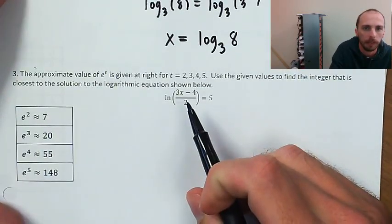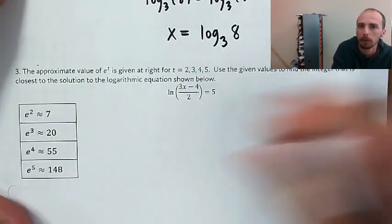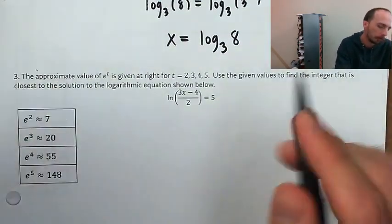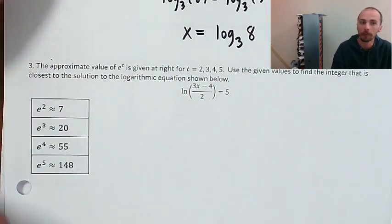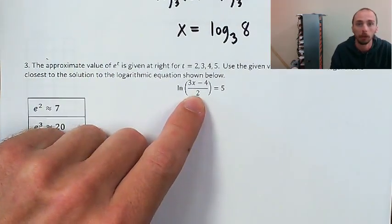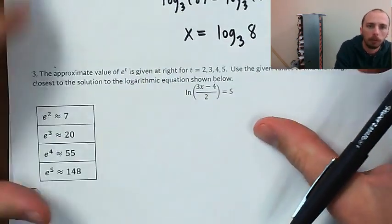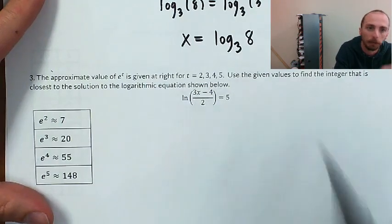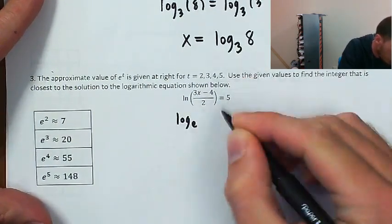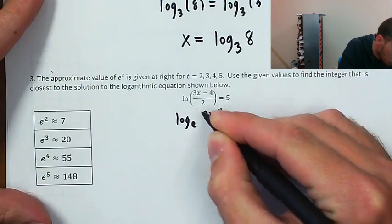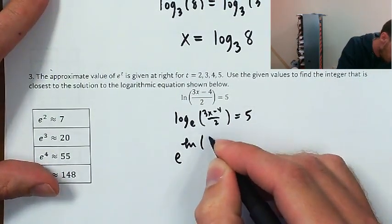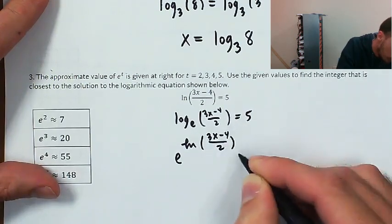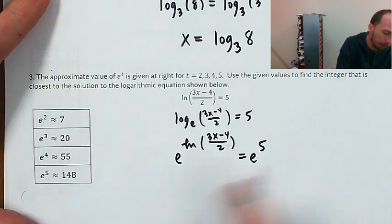Now we're going to solve the equation and approximate it to the nearest integer using that table of values. I've got all this stuff happening on the inside of the natural log, but the natural log itself is all that's on the left side — so it's already isolated, I don't need to do anything. Trying to do algebra from the inside of a log is not going to work. So we want to take e to both sides as a power. This is saying log base e of (3x minus 4) divided by 2 equals 5, so I'm going to take e to both sides.